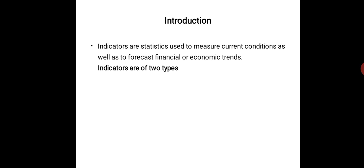Indicators are statistics used to measure current conditions as well as to forecast financial or economic trends. The word indicator itself mentions that it is used to predict something in the future. It is an indication of what is going to happen in future — that is indicators.